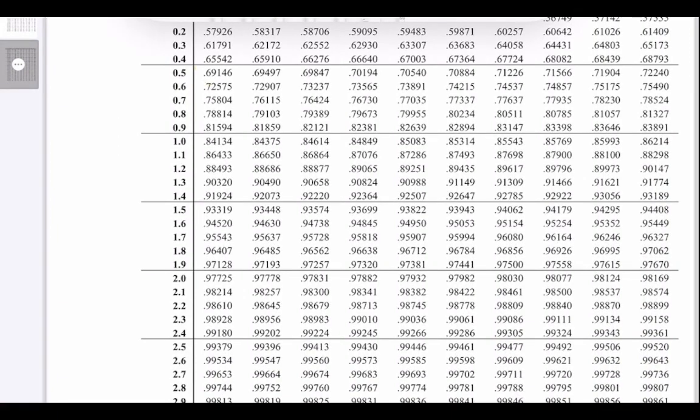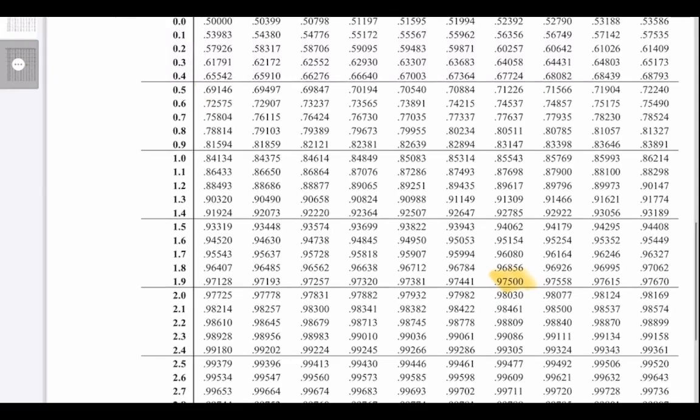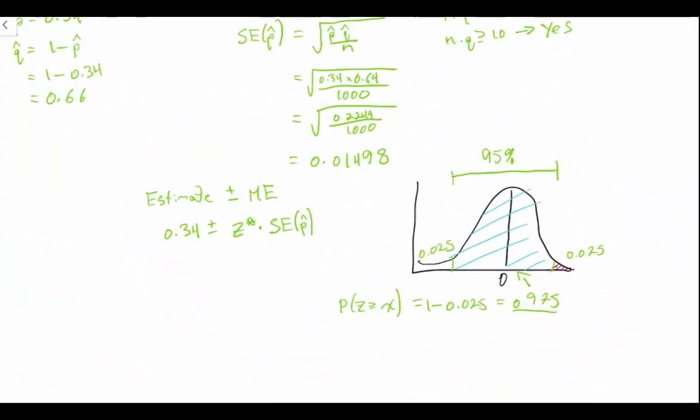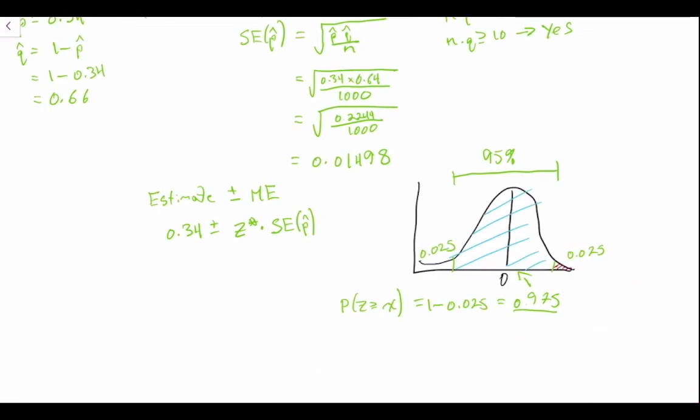So when we look up 0.975, we see it right here. And what do we get? We see that we get a Z score of 1.96. 1.96 becomes our Z critical. So Z star is equal to 1.96.